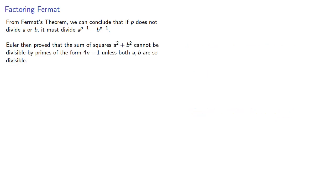Euler then proved that the sum of squares cannot be divisible by primes of the form 4n minus 1, unless both a and b are so divisible. That's a nicely algebraic proof. Suppose 4n minus 1 is prime and not a divisor of a or b, then by the preceding we know the difference of their 4n minus 2 powers is going to be divisible by 4n minus 1.